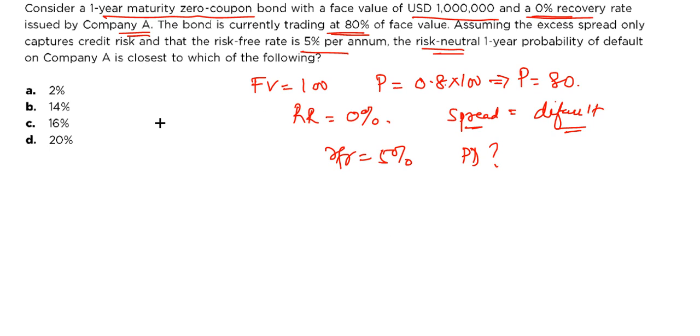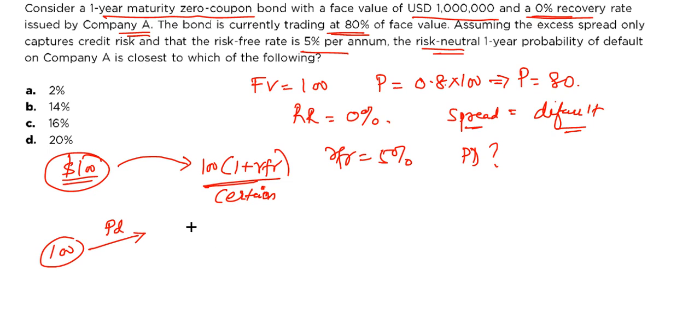Let us structure this problem. If you have put $100 in any risk-free bond, with 100% probability it would become equal to 100 into 1 plus RFR. This is certain payoff that you will get. However, if you are investing in a bond which is having some default probability, if you invest 100, what will happen is with probability of default PD, you will get how much money? You will get whatever the recovery rate, recovery rate into your 100.